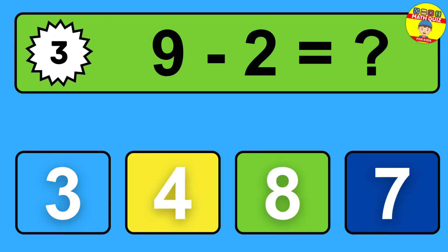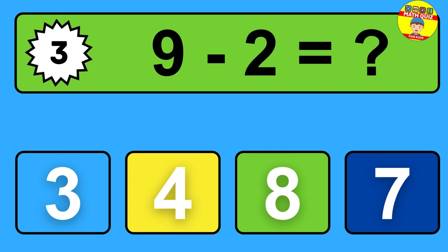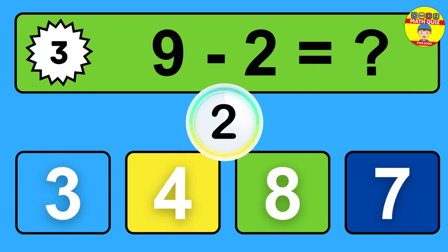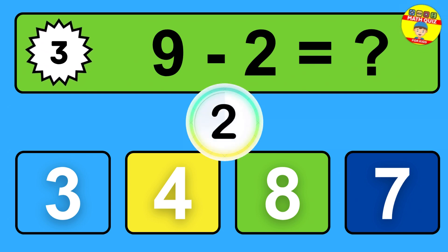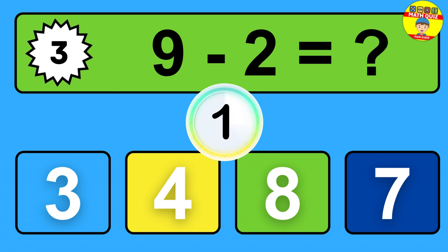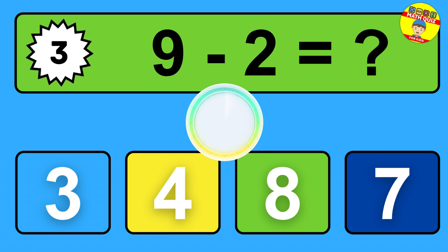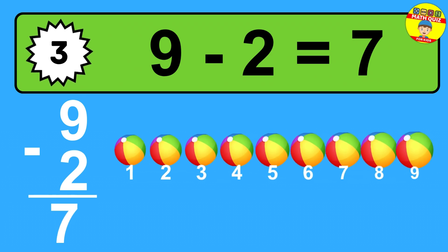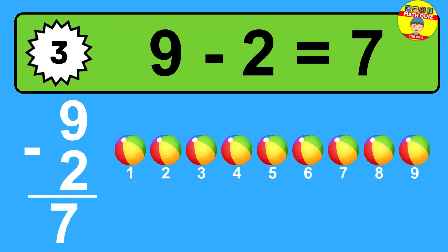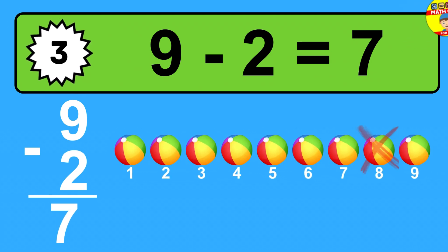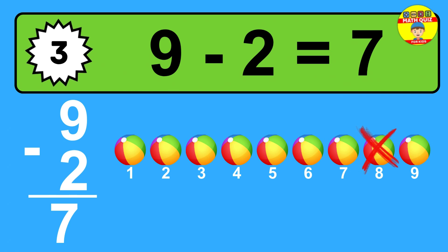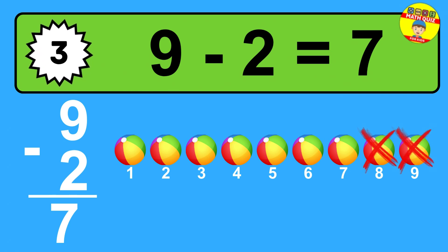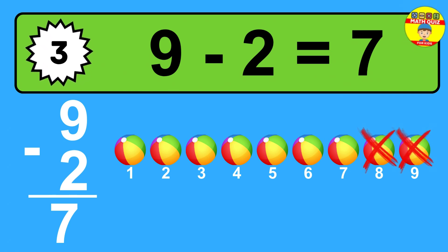Question three: nine minus two equals what? The answer is nine minus two is seven. Let's count it: one, two, three, four, five, six, seven.